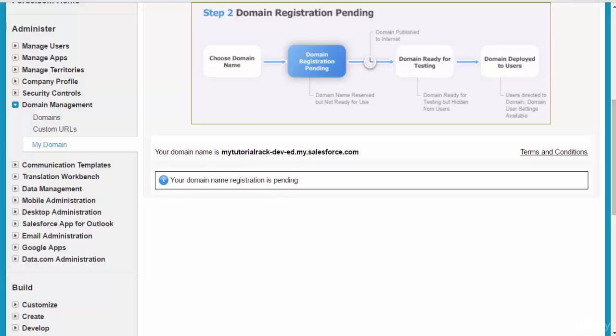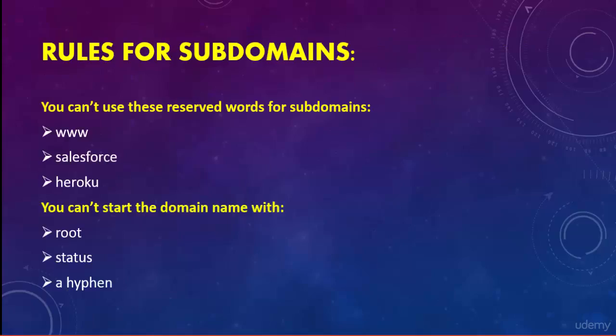In the meantime, let's go through the rules for setting up a custom domain. There are some naming conventions you need to follow when creating your subdomain. There are three reserved words you cannot use: 'www,' 'Salesforce,' and 'Heroku.' Also, when naming your subdomain, do not start with 'root,' 'status,' or a hyphen. These are the rules to follow when creating your custom domain.